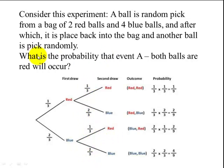So we're looking for what is the probability that event A, both balls are red, will occur? That can happen only one way. The first draw has to be red and then the second draw has to be red. Now since these are independent trials, we use the multiplication rule. One third times one third is one ninth.